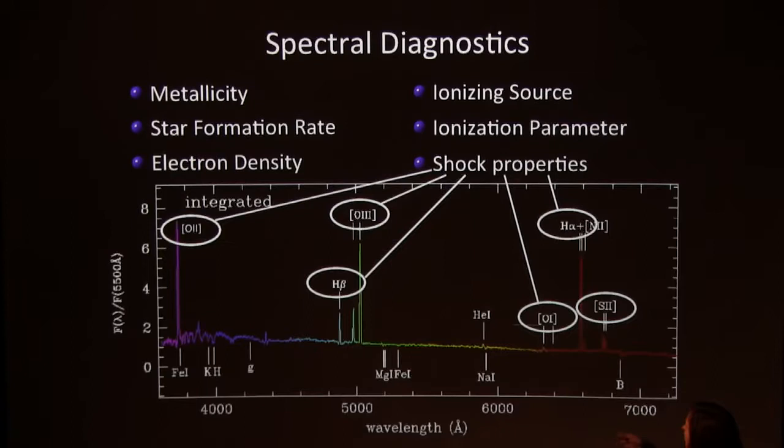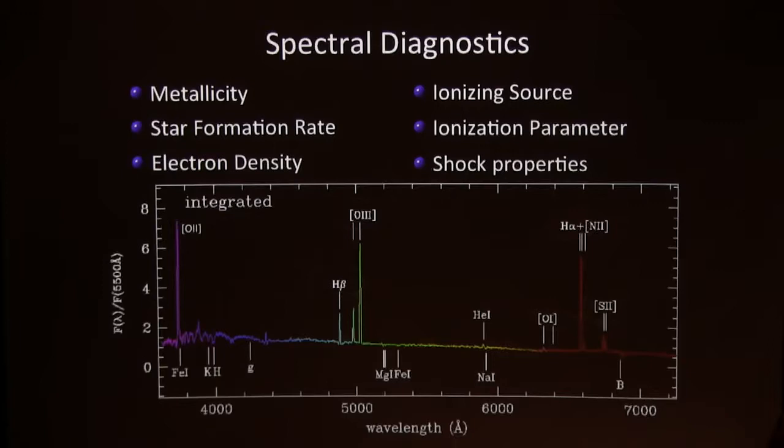Finally, we can also look at shock properties — shocks from galactic winds — and we can use all these lines to measure shock properties, shock velocities, and metallicity in the shock region.